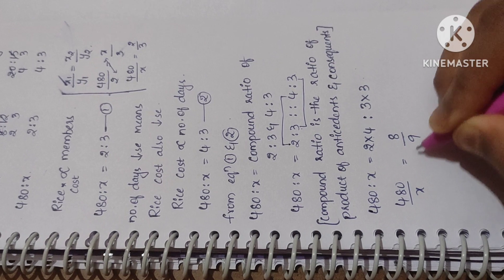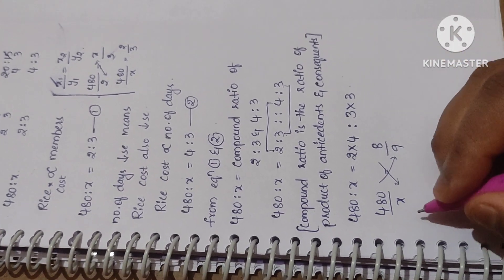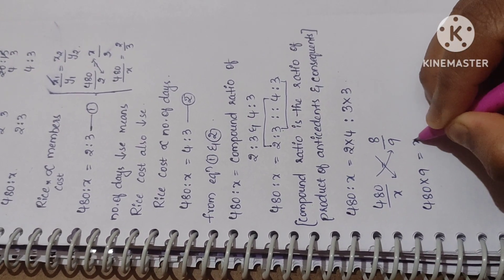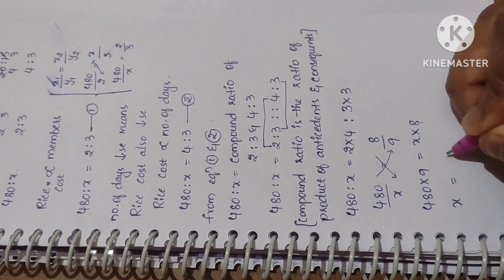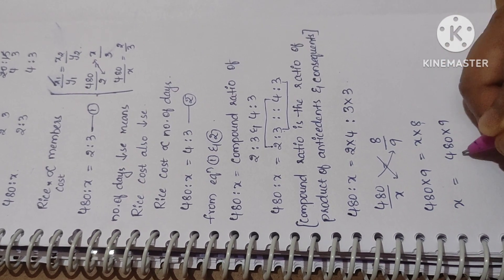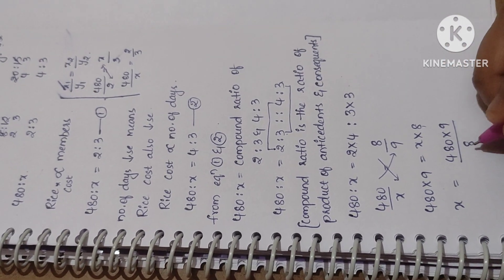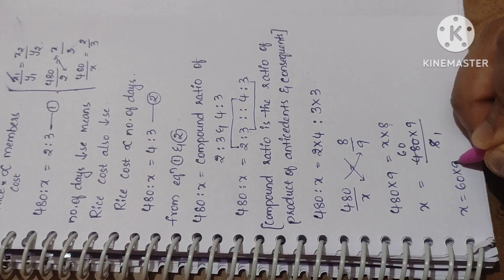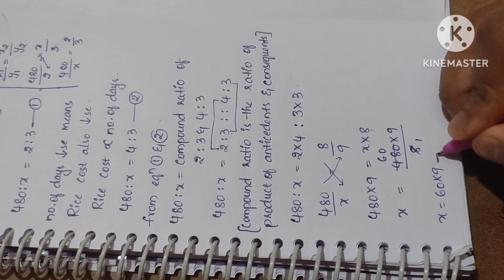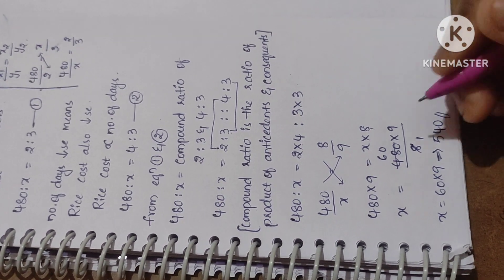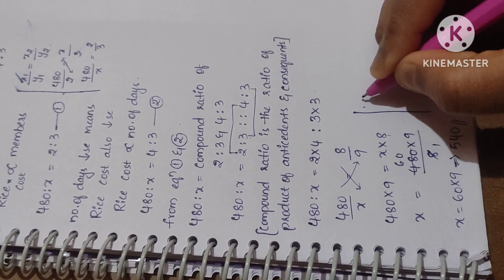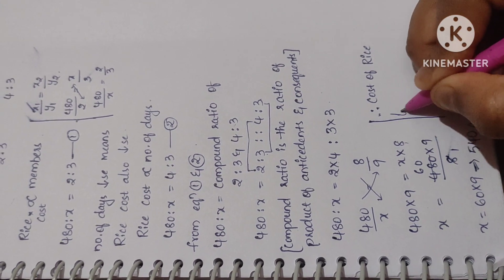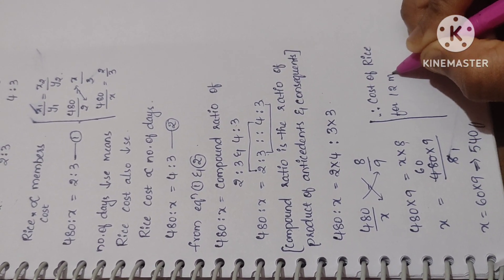This gives 480:x = 8:9. Writing as fractions: 480/x = 8/9. Cross multiplying: 480 × 9 = x × 8, so x = (480 × 9) / 8. Simplifying: 480 ÷ 8 = 60, and 60 × 9 = 540. Therefore x = 540. The cost of rice for 12 members for 15 days is 540 rupees.